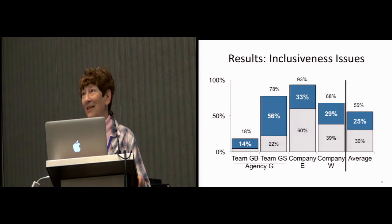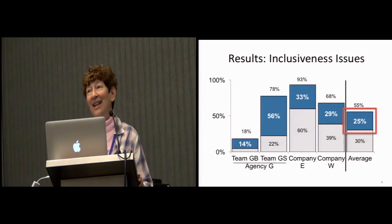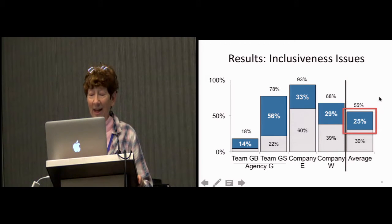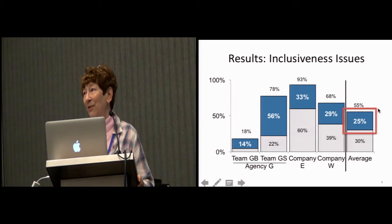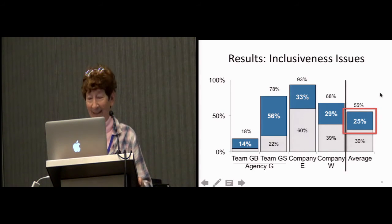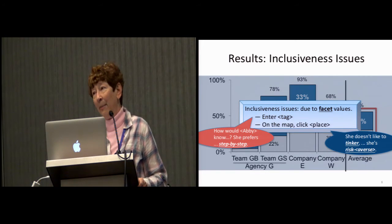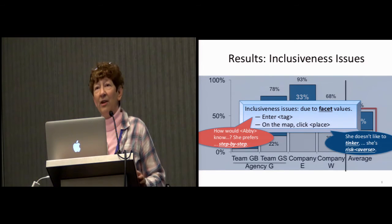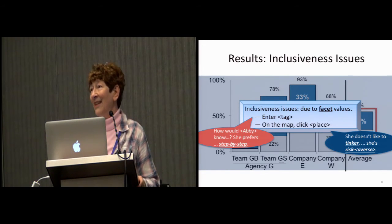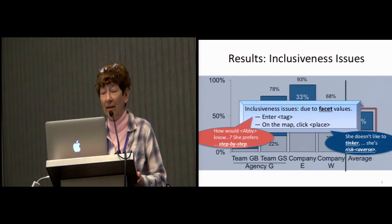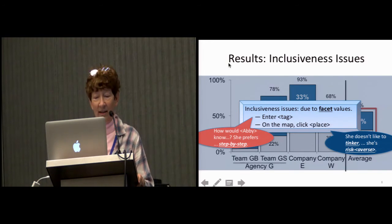So, to the results — what did they find? The point of this method is gender inclusiveness issues. These people, evaluating their own software by themselves with no background in gender differences, found gender inclusiveness issues in 25% of the features they evaluated. That's one out of four — and some of this software is 10 years old and still out there. We defined a gender inclusiveness issue as one found using a facet value — for example, if they found something and said anyone who's risk-averse is going to have trouble with that, and that's the way Abby is, so she's going to have trouble. That issue is going to disproportionately affect the Abbeys of the world.